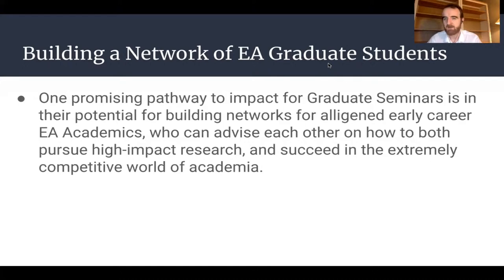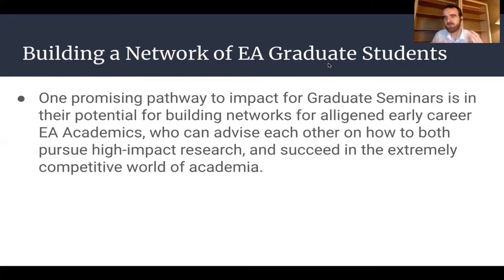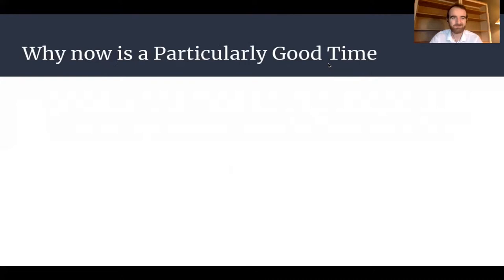Another really promising pathway is the potential for building networks of aligned early career EA academics. It'd be super helpful to have groups advising each other on the very difficult problem of how to pursue both high impact research and highly successful academic research at the same time — these are very often different targets, and finding the Venn diagram overlap can be quite challenging. Encouraging individuals to comment on each other's work early in their graduate career will, in expectation, help improve the quantity and quality of future EA academics. Being part of building that network — establishing a node where those individuals can meet — will provide real value.